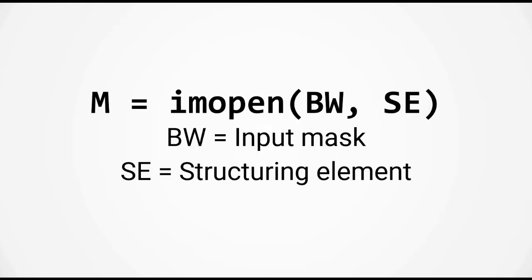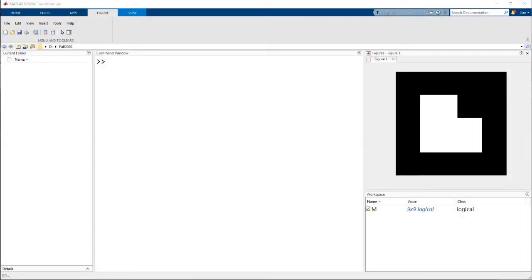To carry out morphological opening in MATLAB use the function imopen. Like with erosion and dilation, imopen takes in two input arguments. The first is the input mask and the second is the structuring element. So let's switch over to MATLAB and try this out.